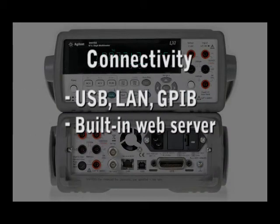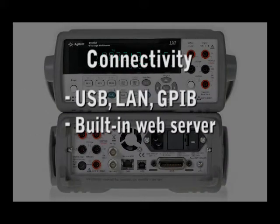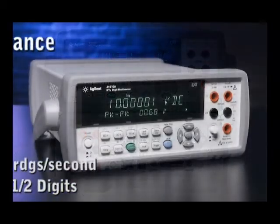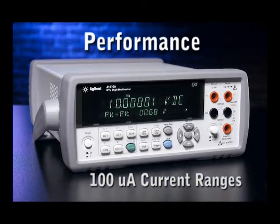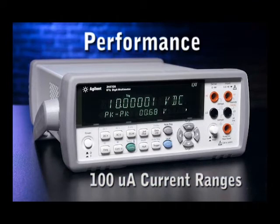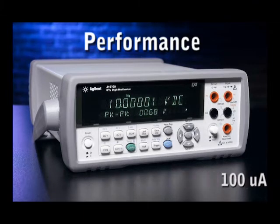On connectivity, we added USB and LAN as well as the GPIB, and we have a built-in web server. On performance, 10,000 readings a second at five and a half digits. We increased the current ranges going all the way down to 100 microamp range with 100 picoamp resolution for the low current draw devices that are used today.